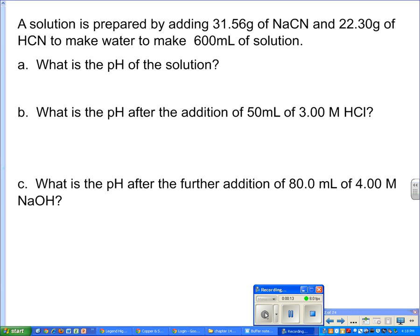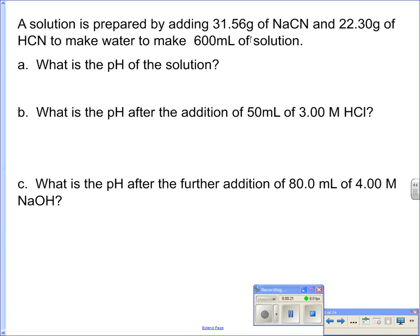So we're going to take the 31.56 grams of NaCN. NaCN has a molar mass of 49, and the HCN has a molar mass of 27, and so I'm going to divide those out. Let me just write it here, divide it by 49.